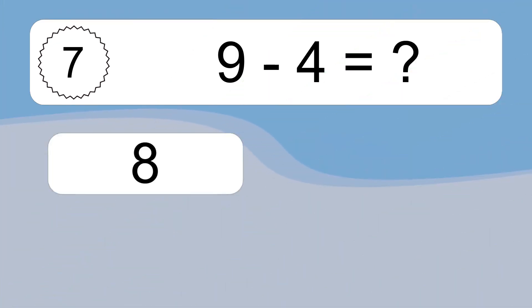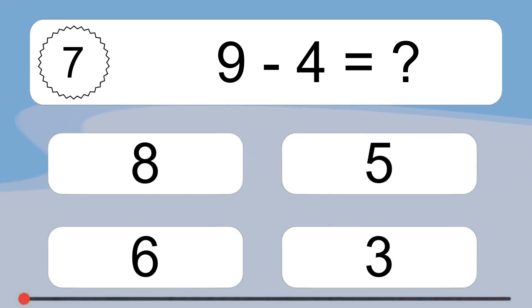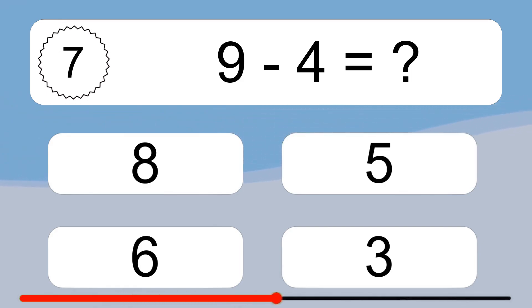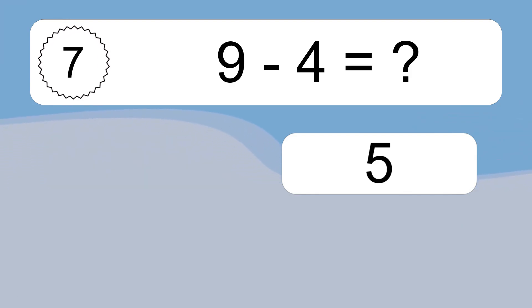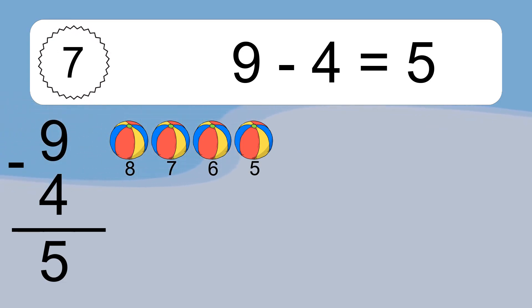9 minus 4 equals what? 9 minus 4 equals 5. Let's count it: 8, 7, 6, 5.